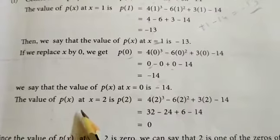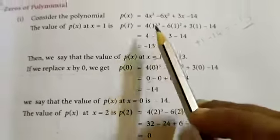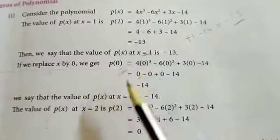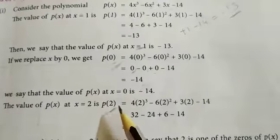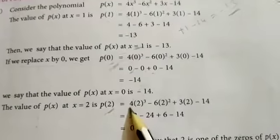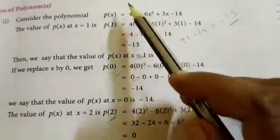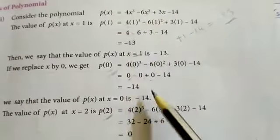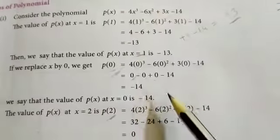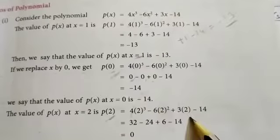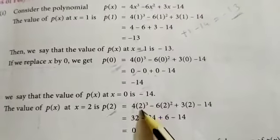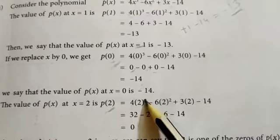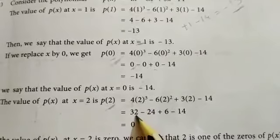Next, the value of p of x at x equal to 2. So p of 2 equal to 4 into 2 whole power cube minus 6 into 2 whole power square plus 3 into 2 minus 14. So only 2 cubed means 8, and 8 fours are 32.